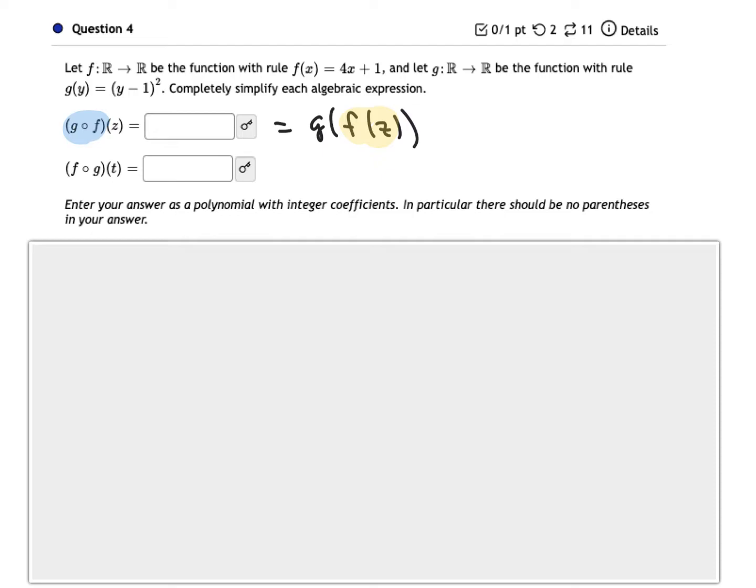So the way we do that is we work inside the parentheses first. So f of z means to follow the rule for f with an input of z. So if we do that, we have f of z is the same thing as 4z plus 1.